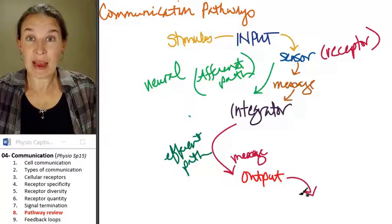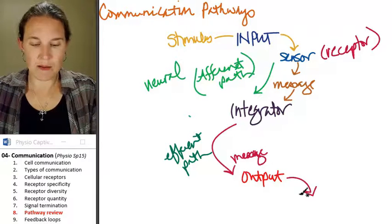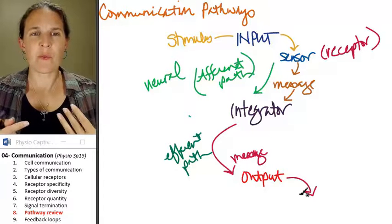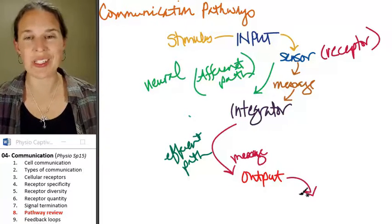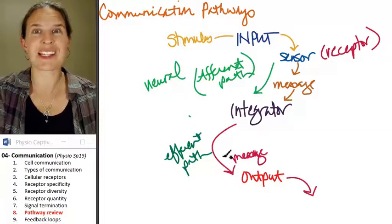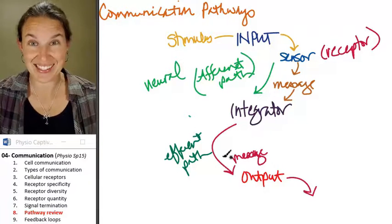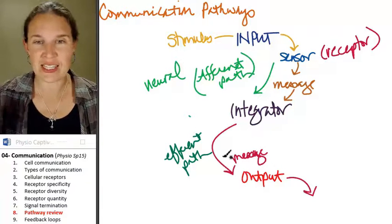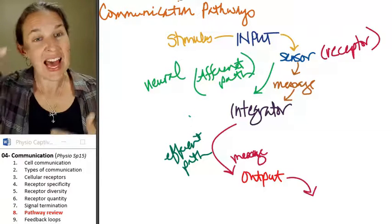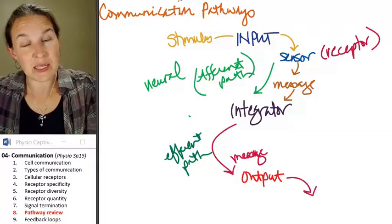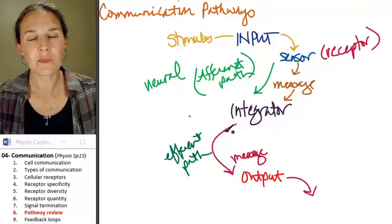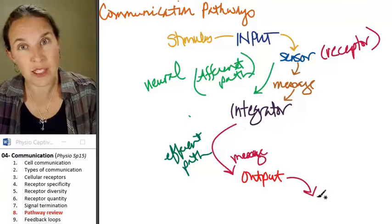The efferent path can be a nerve. If you don't have an actual anatomical structure, you really don't have an efferent path. But we can still send messages because integrators can be endocrine glands, and endocrine glands send out hormones through the blood. We're talking endocrine system in the next lecture. So we'll get more details on that. So the output message gets sent.